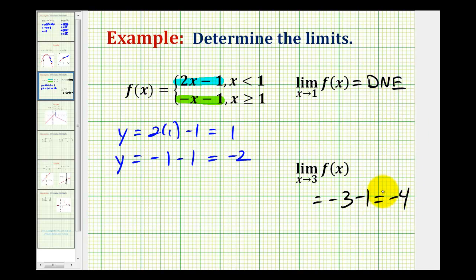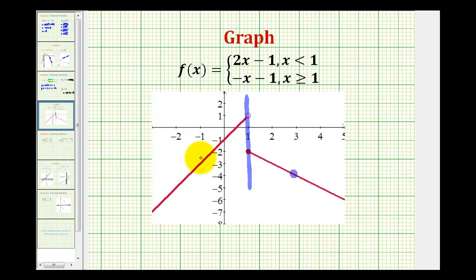And again, just to emphasize this idea, let's look at it graphically. So for the first limit, as we approach positive 1 from the left, we were approaching the function value of 1. And when we approached 1 from the right, we were approaching the function value of negative 2. And that's the reason why the limit did not exist.